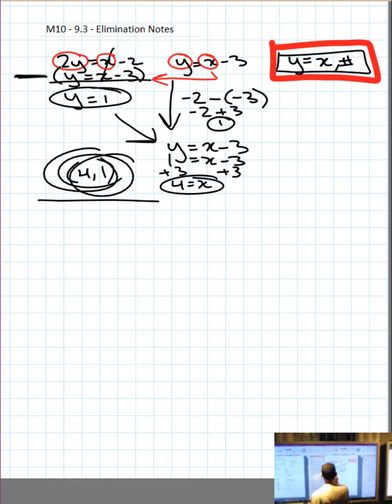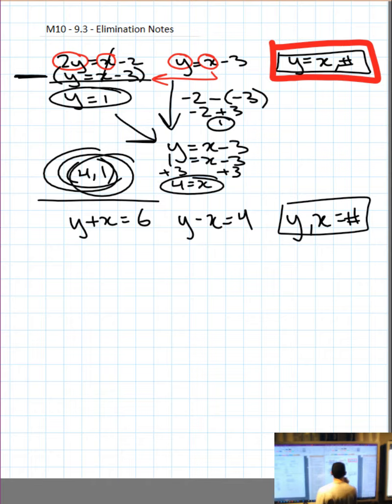Here we've got y plus x equals 6 and we've got y minus x equals 4. So again, we've got y, x equals number, so they're lined up. And y minus y and x minus x or plus x is both zero.